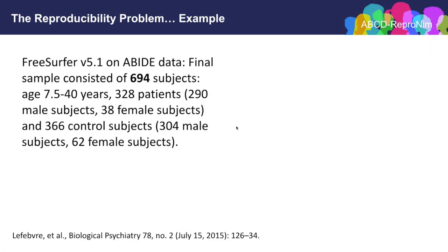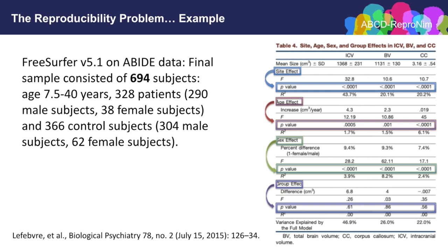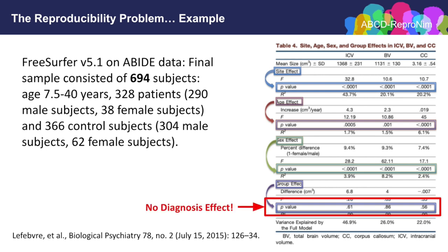Therefore, one would expect it would be a relatively easy finding to replicate if a new large database happened to become available. Enter the Autism Brain Image Data Exchange, or ABIDE, with over 1,000 autism and typical subjects collected from numerous sites, including structural and resting state imaging, made freely available. Simply pick the data, pick an analysis tool — in this case FreeSurfer 5.1 — do some quality assurance in the raw and resulting data, and run the statistical test of corpus callosum volume as a function of diagnosis. This analysis resulted in a dataset of 694 subjects: 328 with autism and 366 controls. Running this statistical analysis identified a robust site effect, a robust age effect, a robust sex effect — and, what? No effect of diagnosis.